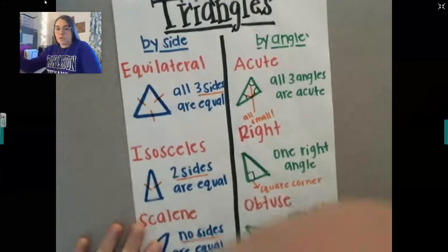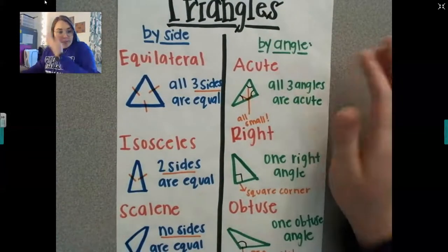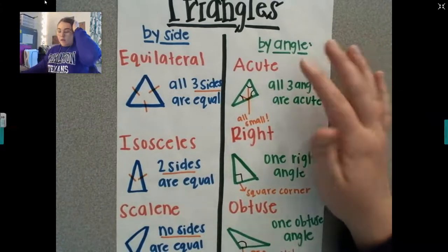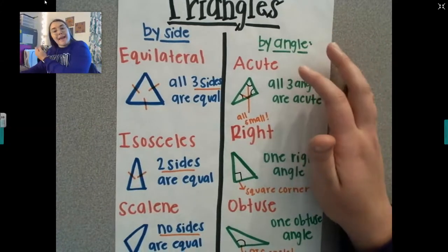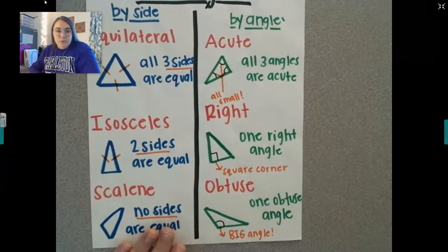We can classify triangles two ways, by side or by angle. The one that I'm most concerned about this year for you in fourth grade is by angle. So we have an acute, a right, or an obtuse triangle.